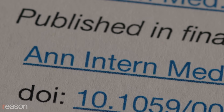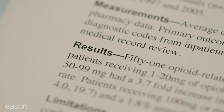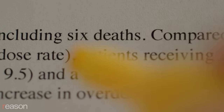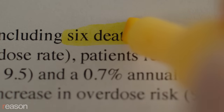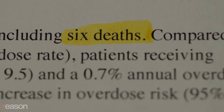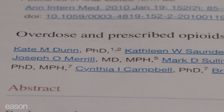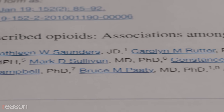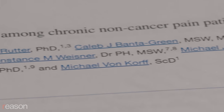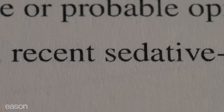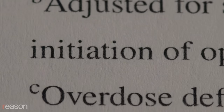An influential 2010 study published in the Annals of Internal Medicine also attempted to show that higher prescribed doses of opioids correlated with a higher risk of death from overdose. But within the study group, there were just six patients who died of opioid overdoses — fewer than the number of study authors. Yet the authors claimed statistically significant results after adjusting for smoking, depression, substance abuse, comorbid conditions, pain site, age, sex, recent sedative-hypnotic prescription, and recent initiation of opioid use.